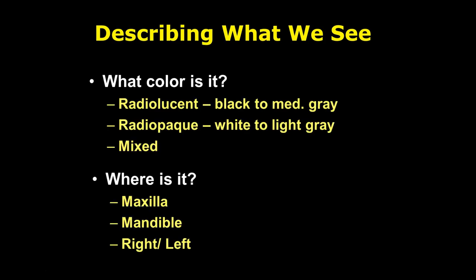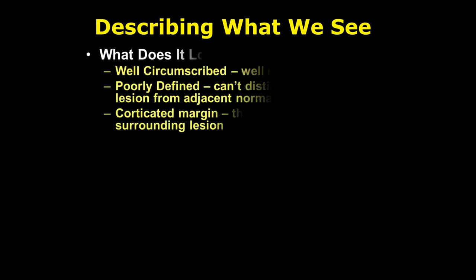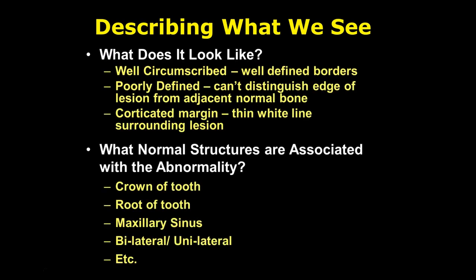You always describe in a structured method. Start with what color it is, where it is, what does it look like, and what normal structures are associated with the abnormality. You're trying to develop map coordinates for the doctor, which is why you must use standardized words such as circumscribed, corticated, non-corticated, and poorly defined.